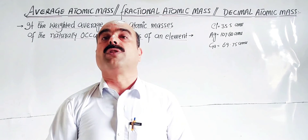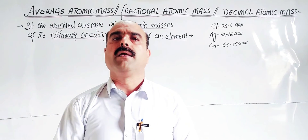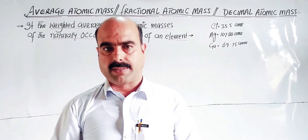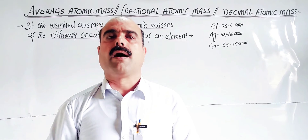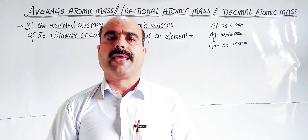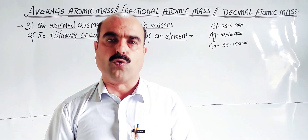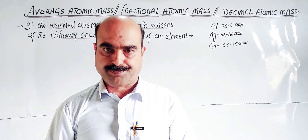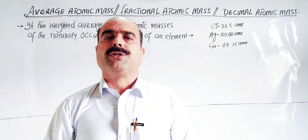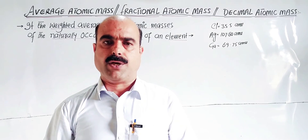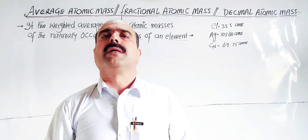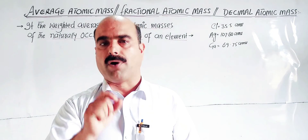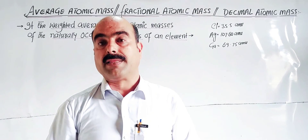Isotopes will be discussed in the next coming chapters, but briefly: atoms of the same element having the same atomic number but different mass numbers are called isotopes, and this phenomenon is called isotopy. This phenomenon was discovered by Soddy.